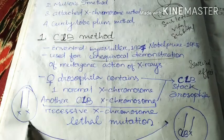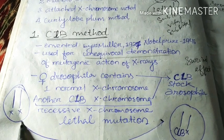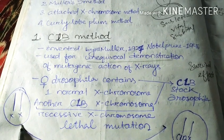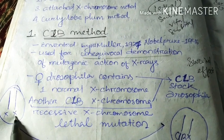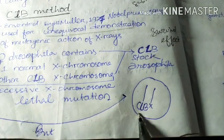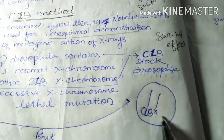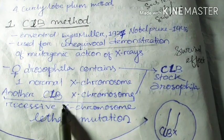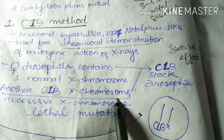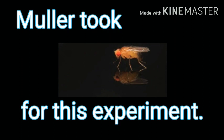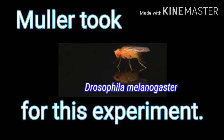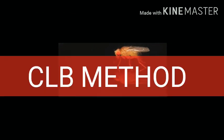He identified the X chromosome as having the lethal gene. In the homozygous condition, there are two X chromosomes, but what he did was change it into the heterozygous condition — one normal X chromosome and another is the CLB X chromosome. For this treatment, he took X-rays to induce sex-linked recessive lethal mutations in Drosophila melanogaster. He developed a technique called the CLB method.